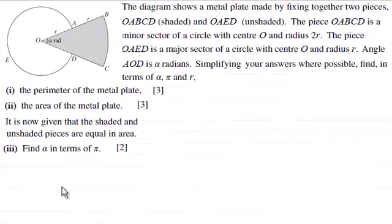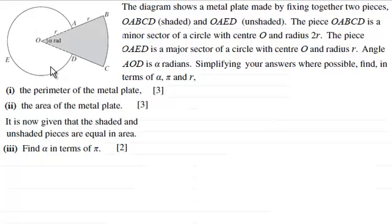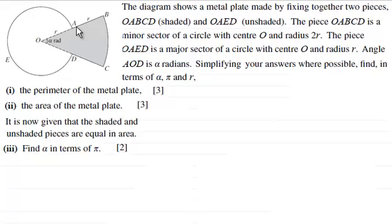Hi there. For this question we're given a diagram showing a metal plate made by fixing together two pieces: OABCD, shown shaded, and OAED, shown unshaded. The piece OABCD is a minor sector of a circle with centre O and radius 2r. The piece OAED is a major sector of a circle with centre O and radius r.